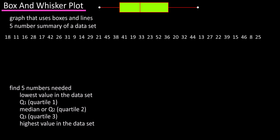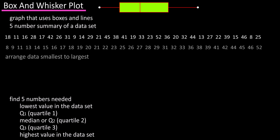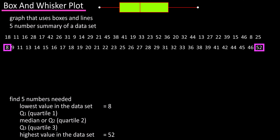To find these, we're going to arrange the data in order from smallest to largest. Once we've done this, we can see that the smallest value is 8 and the highest value is 52.